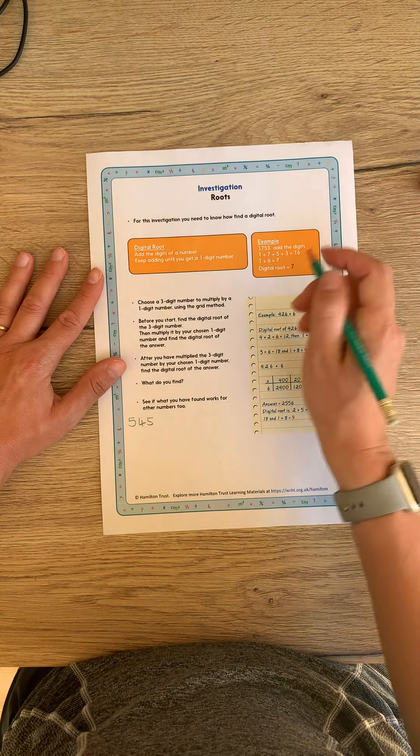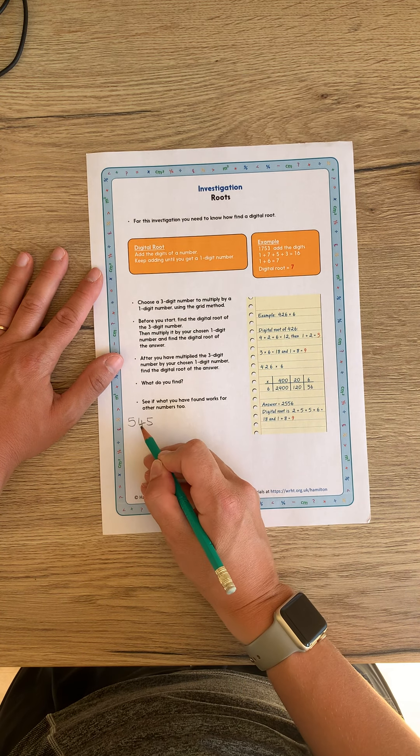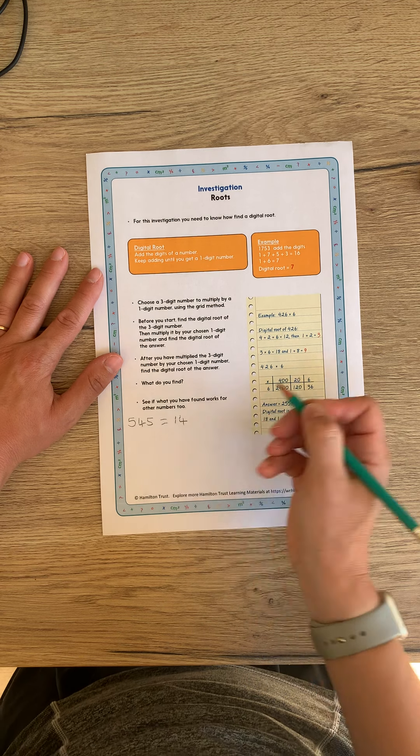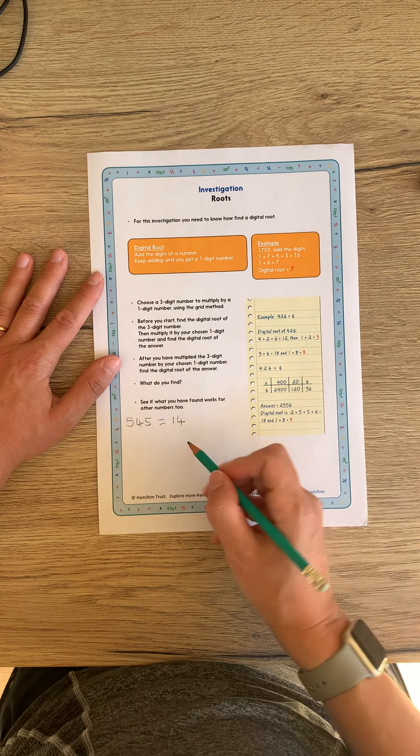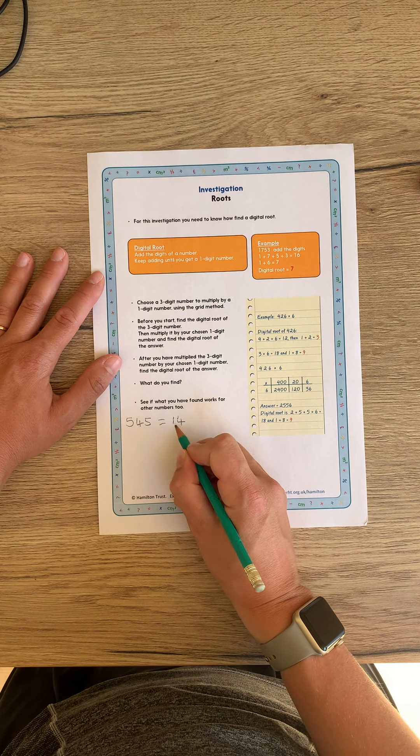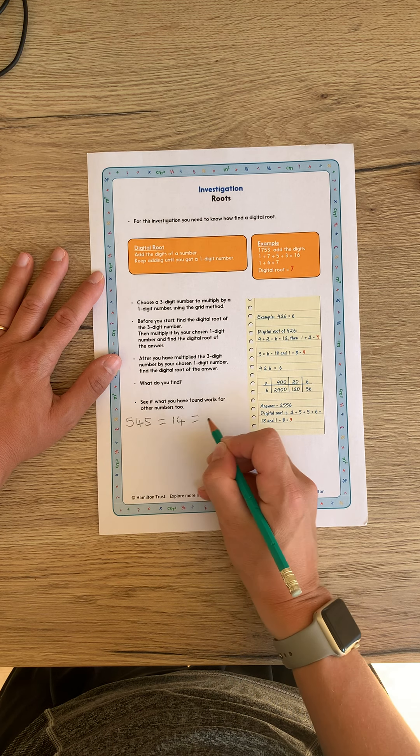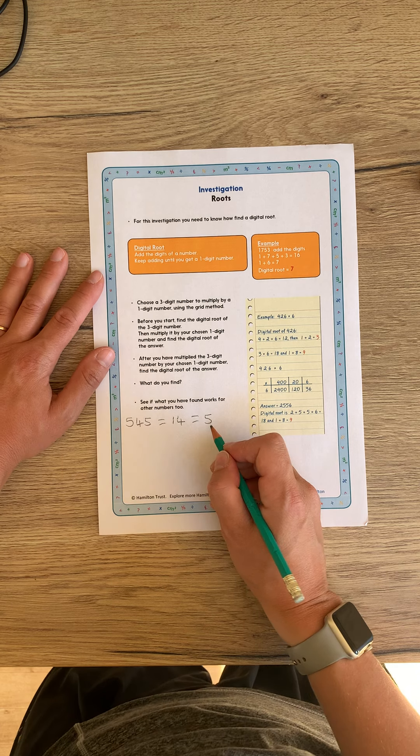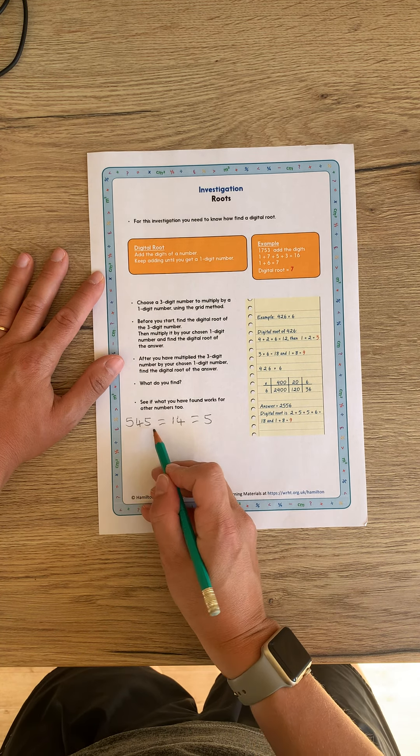So to generate a digital route, you add the digits together. So five and four and five equals 14. Now, you keep adding your digits together until you get a single-digit number. So I haven't got a single-digit number. I've got 14. So again, I add these digits together. One add four equals five. That's giving me my digital route.